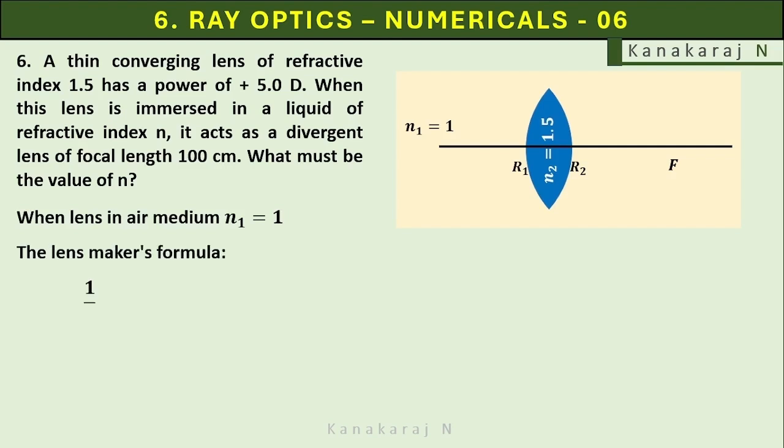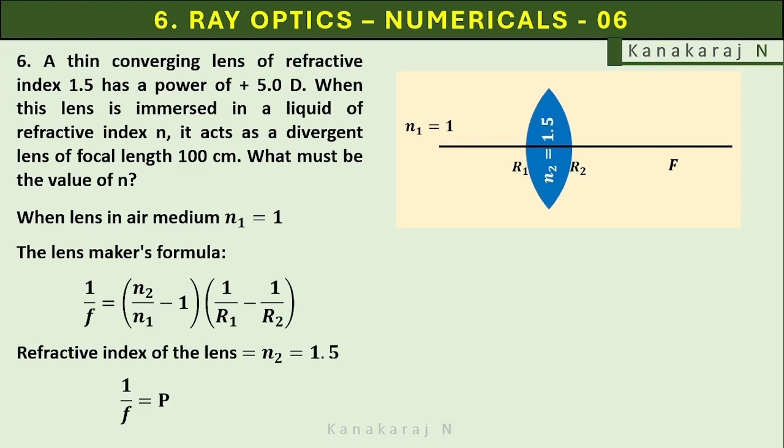The lens maker's formula says that 1 upon f equals n2 upon n1 minus 1 multiplies 1 upon r1 minus 1 upon r2. Refractive index of the lens n2 equals 1.5. Then, 1 upon f is called power. The power is given in the problem as plus 5.0 diopters.